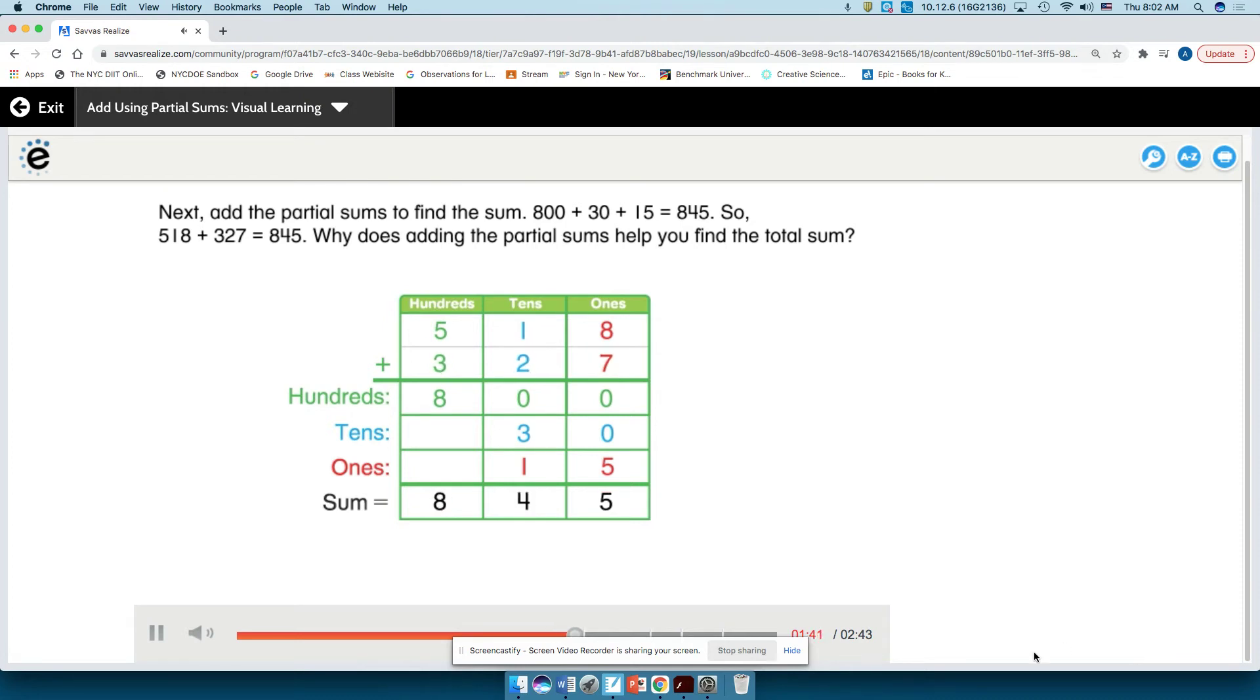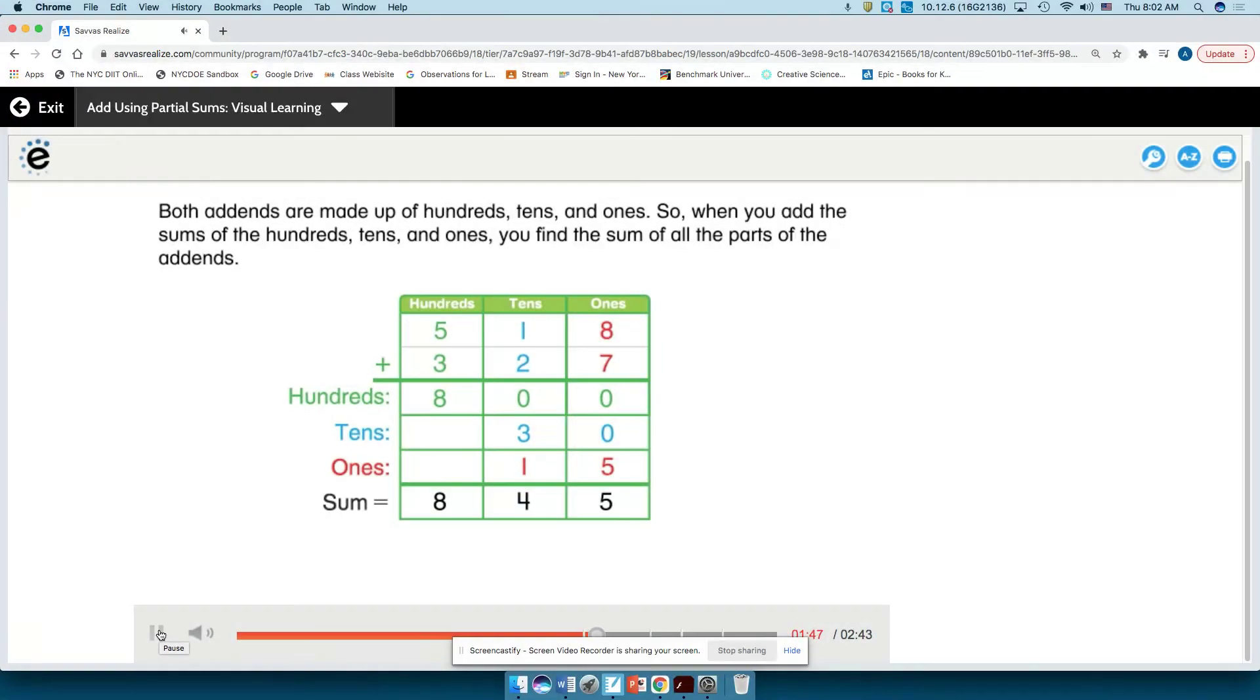Why does adding the partial sums help you find the total sum? Both addends are made up of hundreds, tens, and ones. So, when you add the sums of the hundreds, tens, and ones, you find the sum of all the parts of the addends.